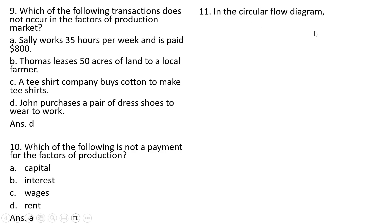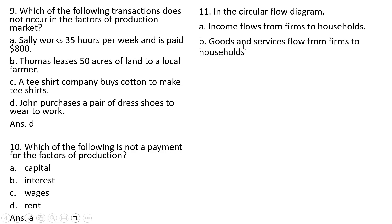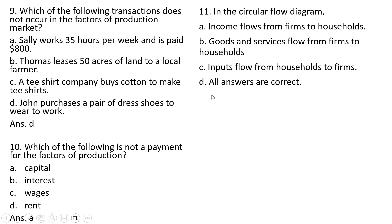Question 11: In the circular flow diagram — income flows from firms to households, that is correct. Goods and services flow from firms to households, that is correct. Inputs flow from households to firms, that is correct. So all answers are correct here. Answer choice D.